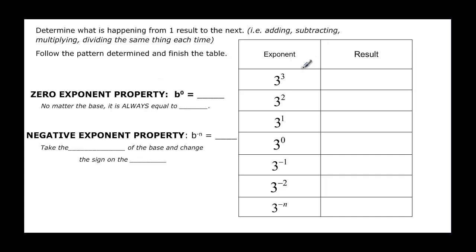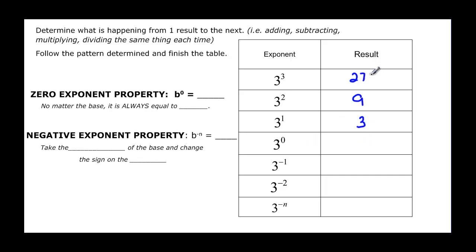So 3 cubed is 27, and 3 squared is going to be 9. 3 to the first is going to be 3. And 3 to the zero — let's come back here and look and see if we can figure out what was happening.